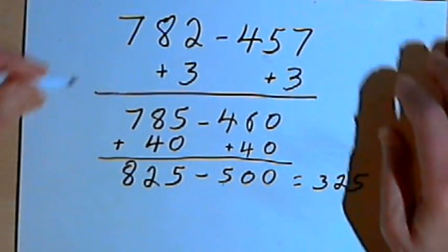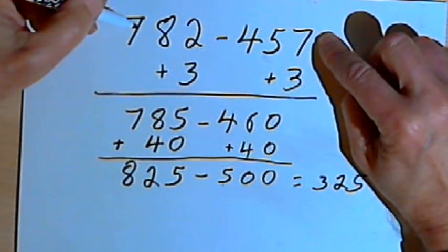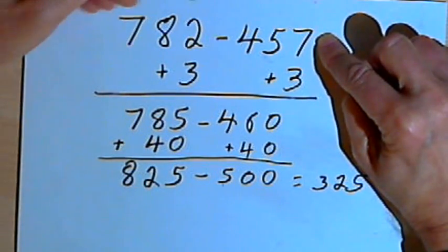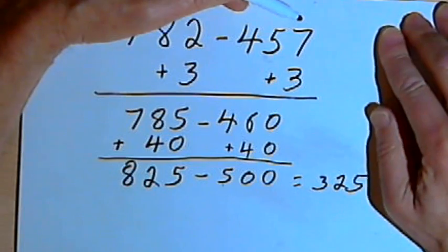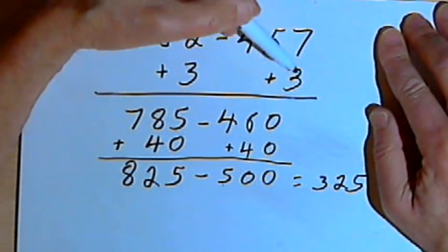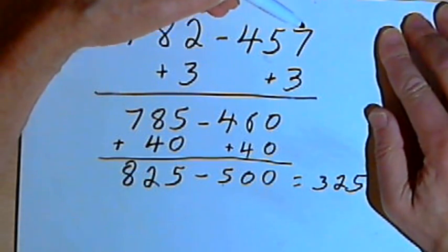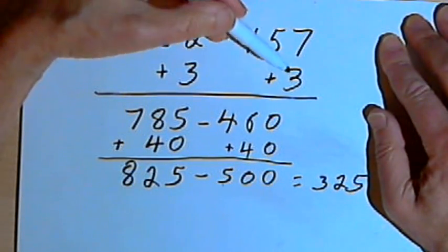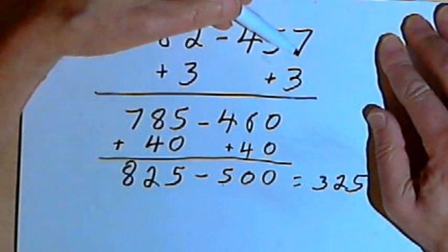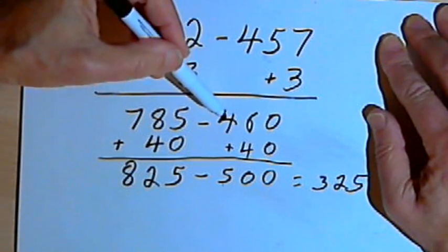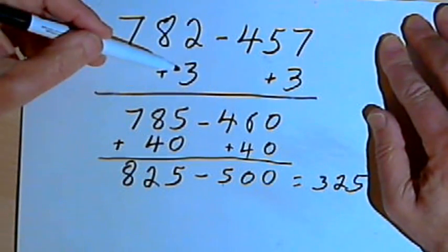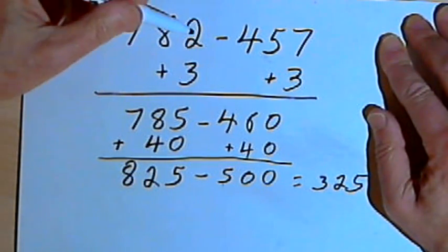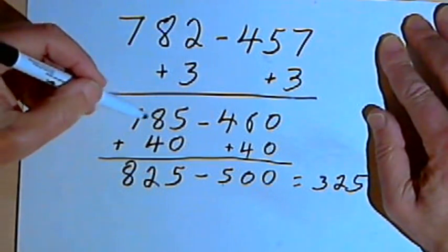So just to review the process, I start out with a subtraction problem. And the first thing I want to do is, working with the number that I'm taking away, I want to add something to it to put a 0 in its units column. So when I had 457, I added a 3 to get a 0 in the units column. It gave me 460. Of course I have to add 3 to the other number as well. So I added 3 to 782, and got 785.